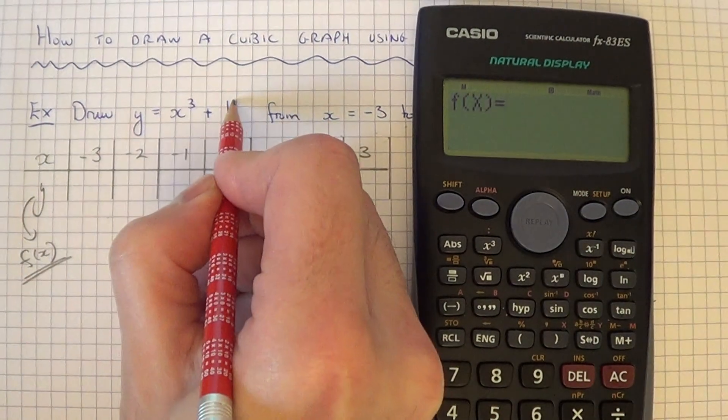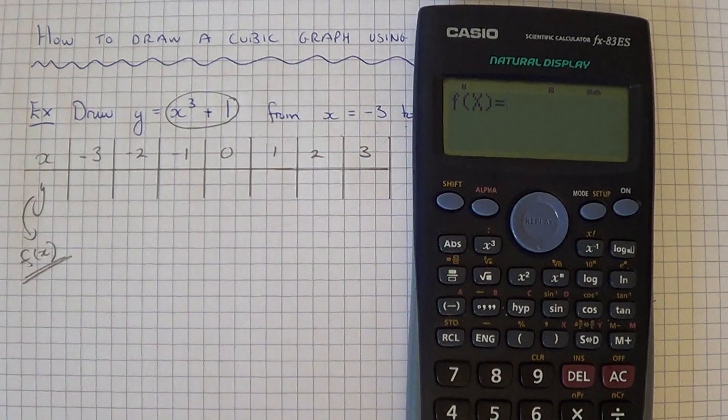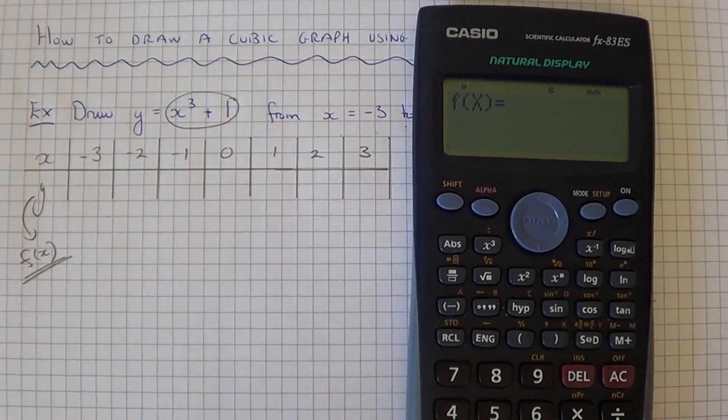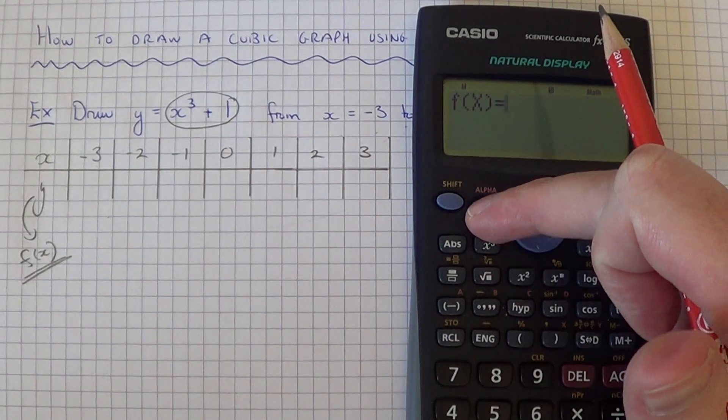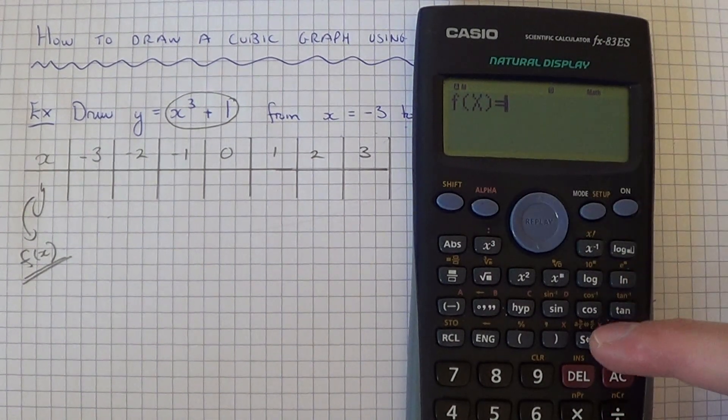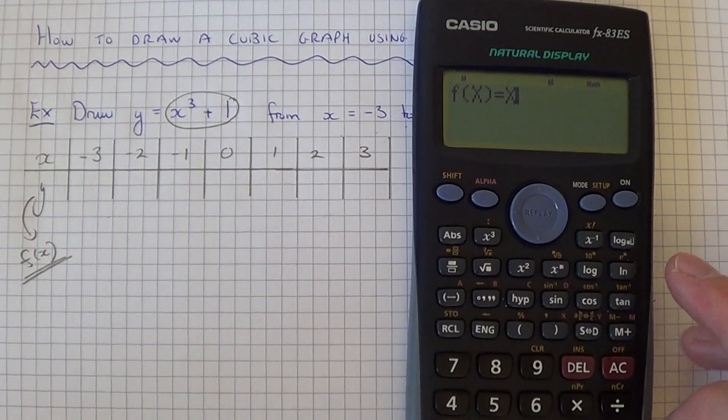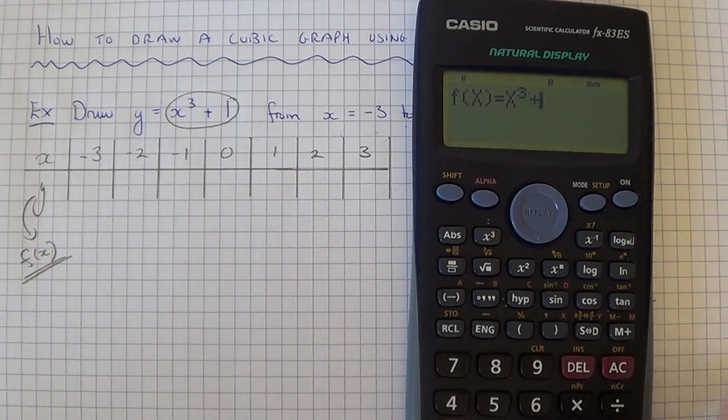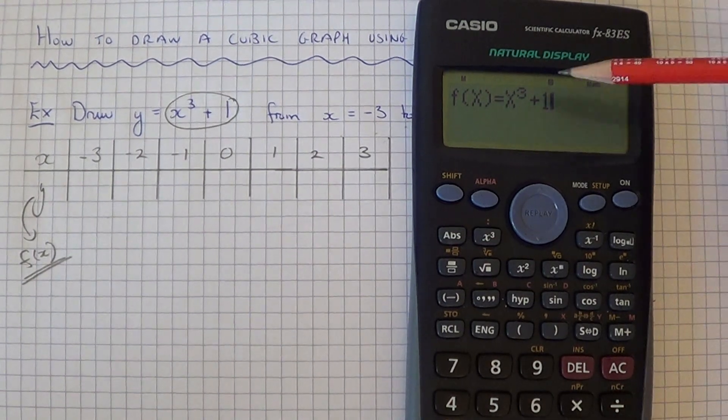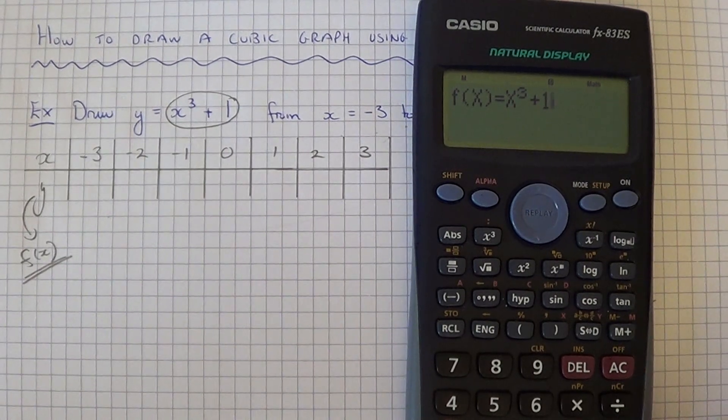We just need to now type in our equation here, which is x cubed plus 1. To do this, use the Alpha key. Go to Alpha and press the right bracket and you get an x come up. We want to cube this, and then we've got a plus 1 at the end. You can see we've typed in our graph here. So hit the equals.